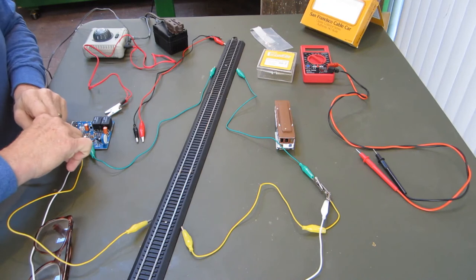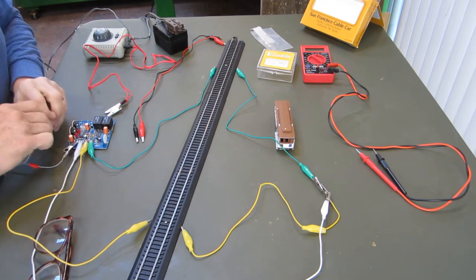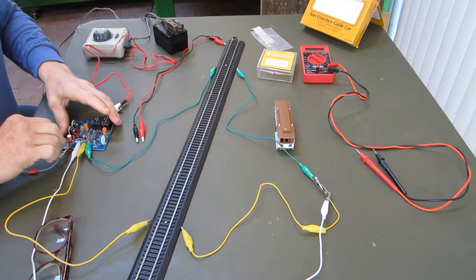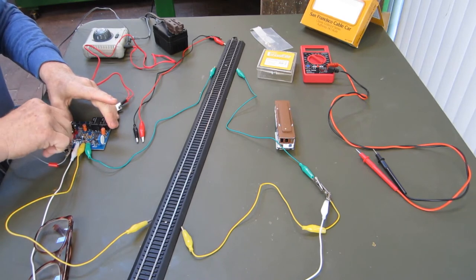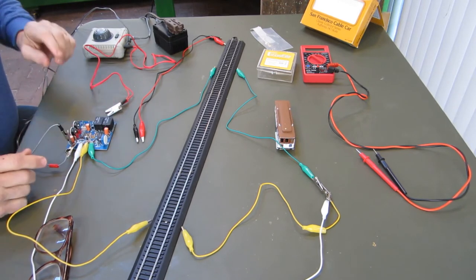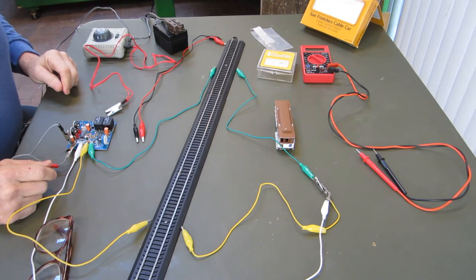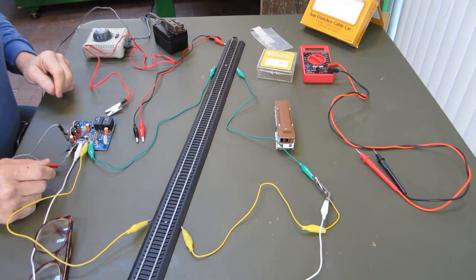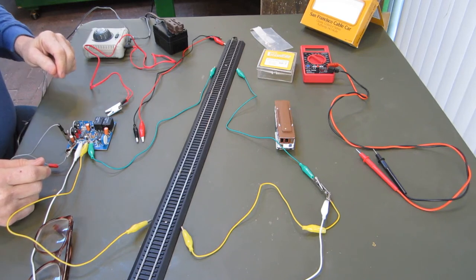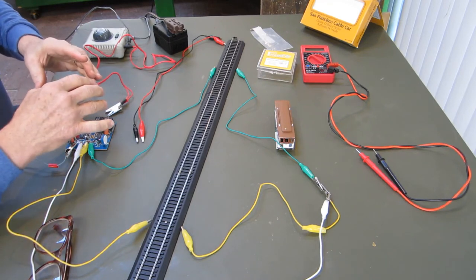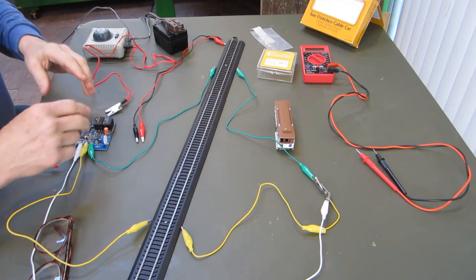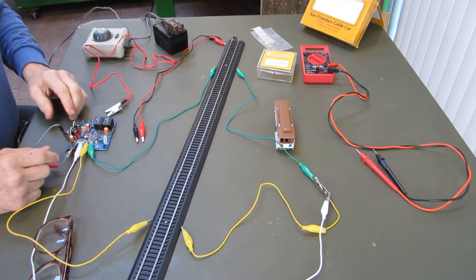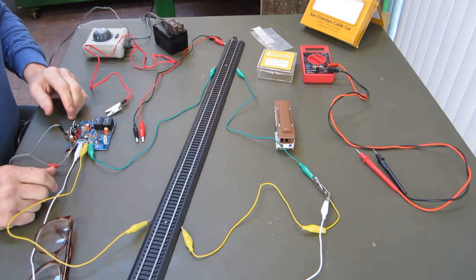I'll attach my leads to the plus and minus. It's also important to note that the polarity of the track leads and the circuit board have to match or it doesn't work. The train will run right over the optosensors and keep going.